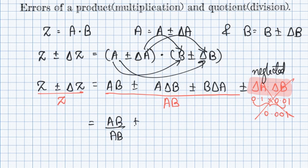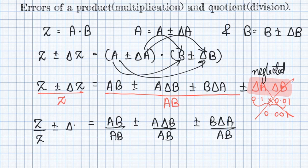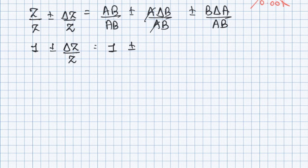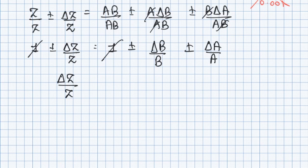Neglecting that term, we deal with only three terms: ab/ab ± a·Δb/ab ± b·Δa/ab, and on the right side we have Z/Z ± ΔZ/Z. So we get 1 ± ΔZ/Z = 1 ± Δb/b ± Δa/a. The 1s cancel out, and the relative error ΔZ/Z equals Δa/a ± Δb/b.